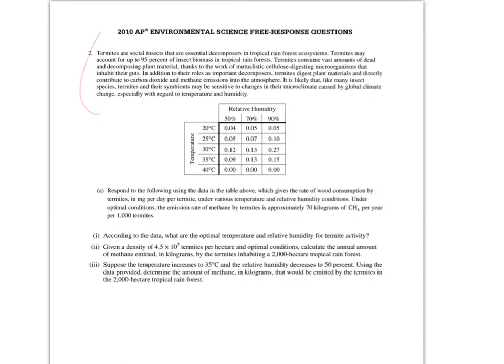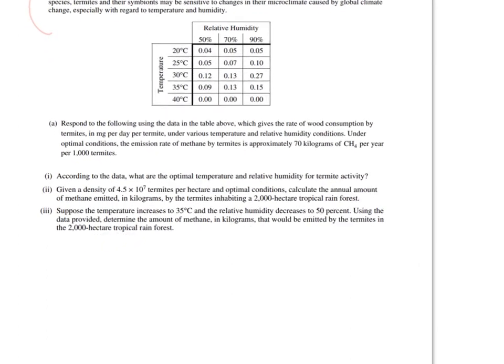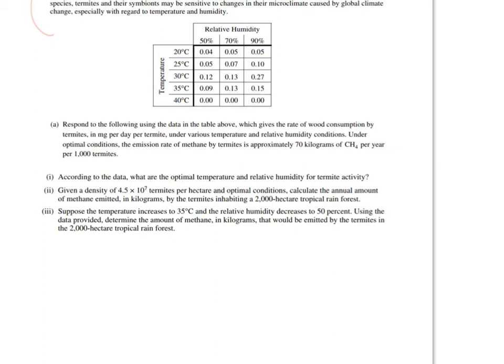This question is not really math. It's more about reading a chart. So take a look at the chart up here. Which box has the highest rate of consumption? Look for the biggest number. The largest number is 0.27. And so now let's look at the temperature and the humidity. The answer is 30 degrees Celsius and 90% relative humidity.